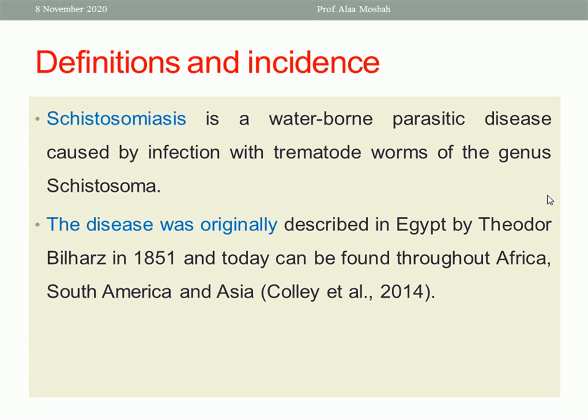Schistosomiasis is a water-borne parasitic disease caused by infection with trematode worms of genus Schistosoma. The disease was originally described in Egypt by Theodore Bilharz in 1851 and today can be found throughout Africa, South America, and Asia.